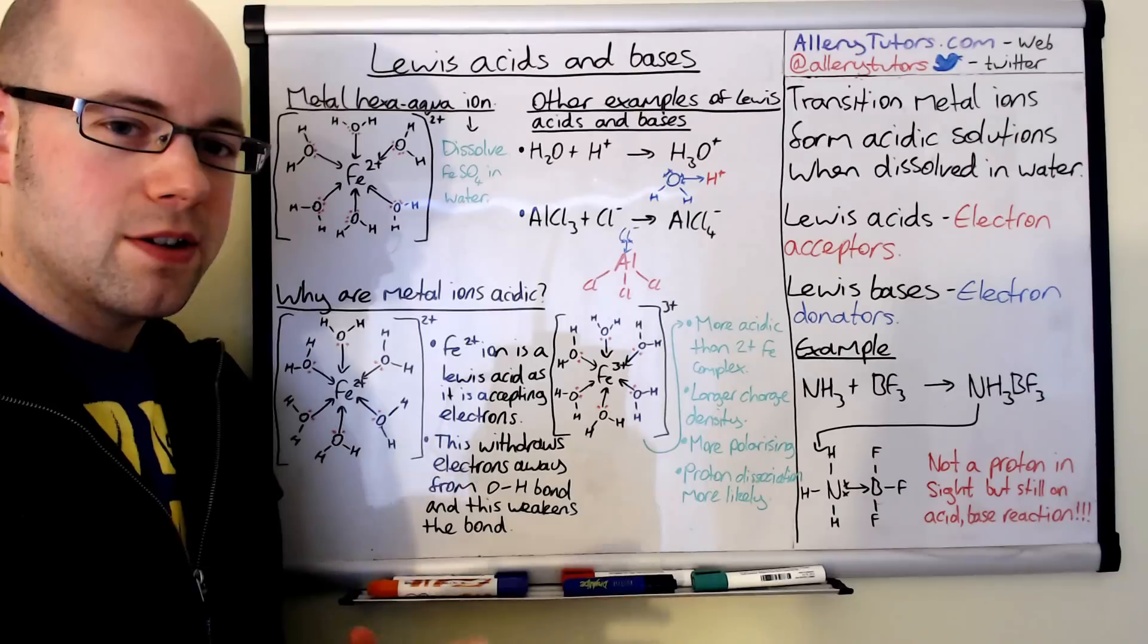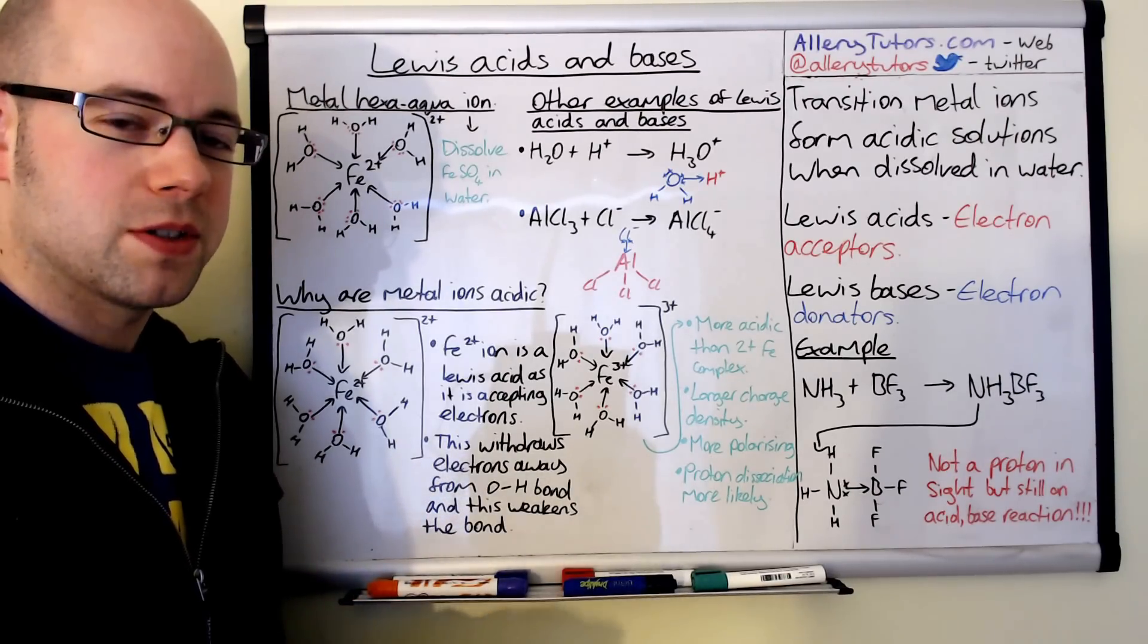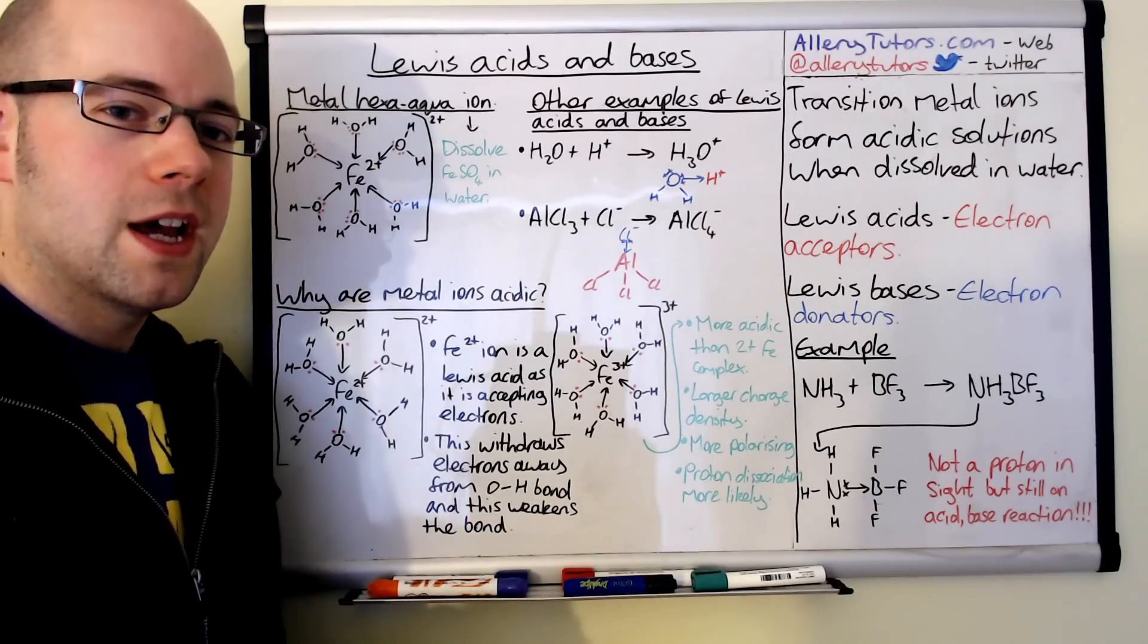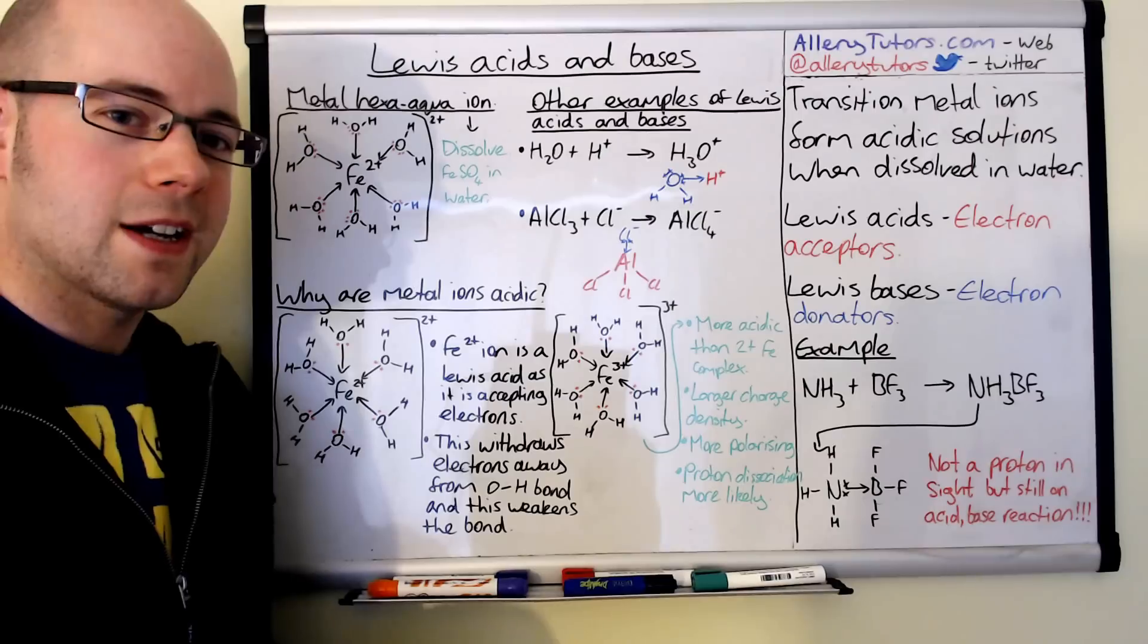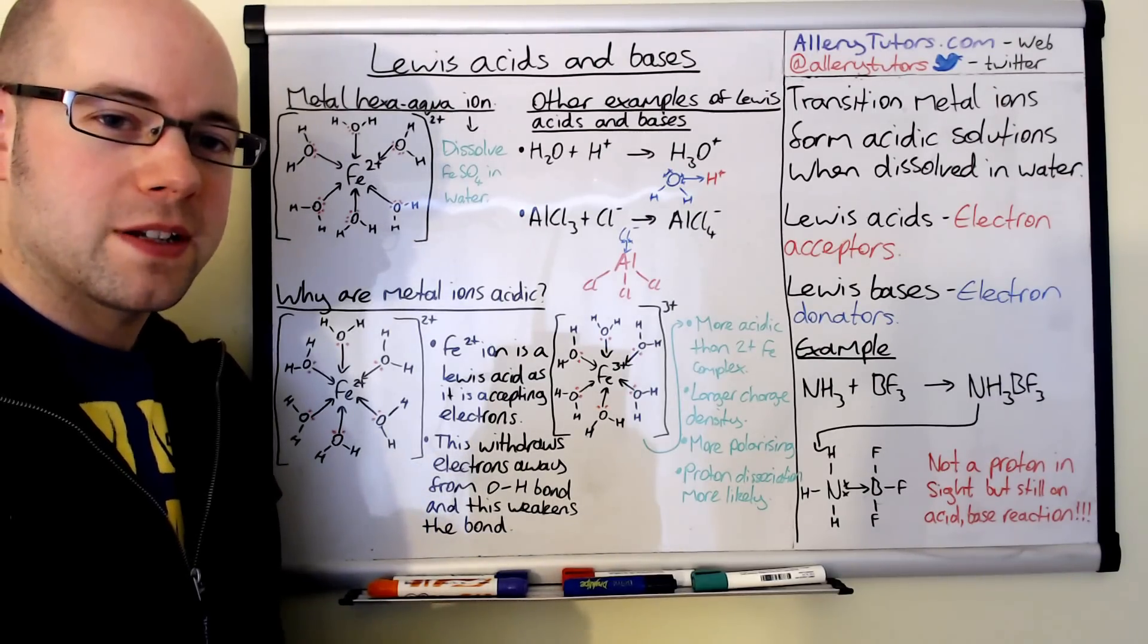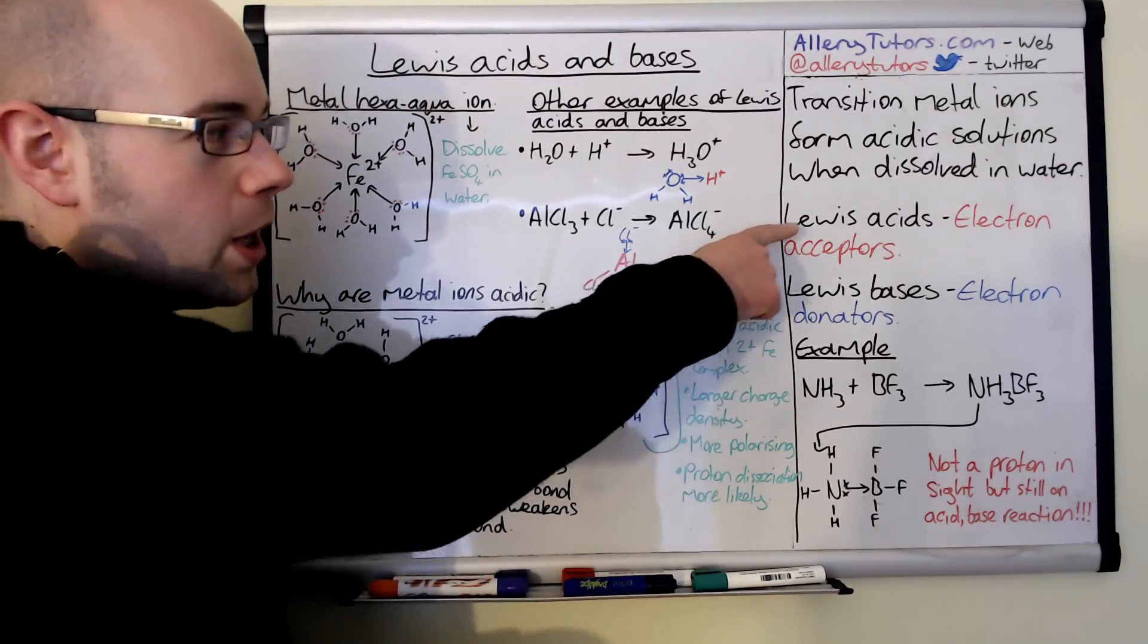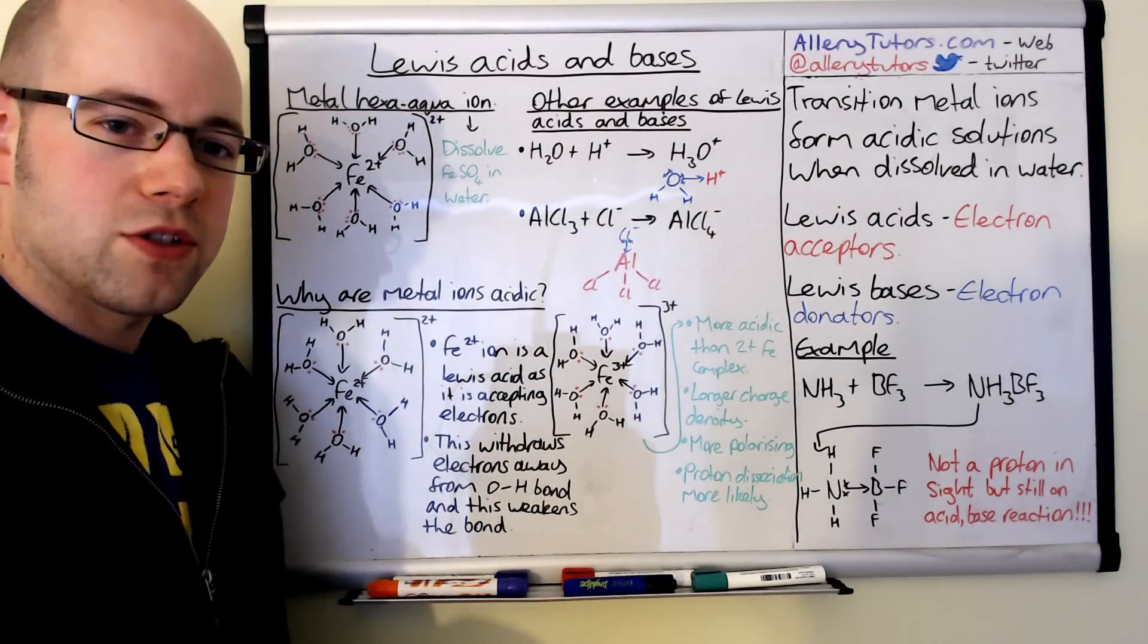However, there was a need for another theory to explain other chemicals that didn't have protons being donated or accepted but were still classed as acidic. A new theory came out by Gilbert Lewis, an American scientist, who came up with the idea of explaining acids and bases in terms of electrons instead. He called them Lewis acids and Lewis bases. A Lewis acid is an electron acceptor and a Lewis base is an electron donor.